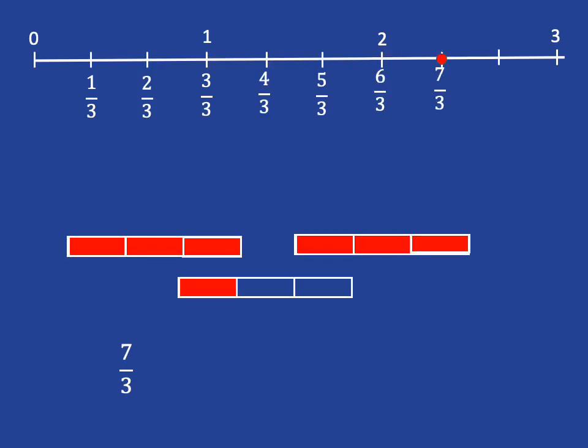Now, if I want to take that 7 thirds and write it as a mixed number, which means as a whole number with a fraction, what I really want to ask myself is how many whole one unit pieces are there in 7 thirds?